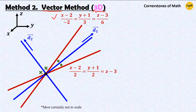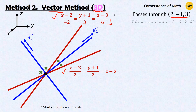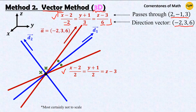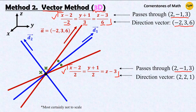Let us take a look at these two equations of lines in 3D space. In this expression, the numerator tells us the one point that the line passes through, which is (2, −1, 3), and the denominator contains the information about the direction vector of the line. In this case, the direction vector is (−2, 3, 6), which is vector A. For the second equation, the numerator tells us the line passes through (2, −1, 3), and the direction vector is (2, 2, 1), which is vector B.